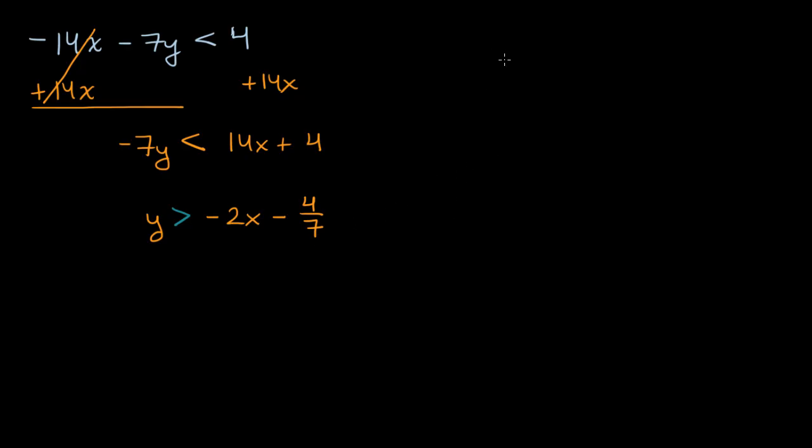So let me draw some axes here. So this is going to be an approximation. Obviously, this is a hand-drawn graph that we're dealing with. So just like that, that's my x-axis. And let's see, our y-intercept is negative 4 sevenths, which is a little bit more than a half. So let's say that this right over here is, let's say this right over here is one, or negative one, I should say.